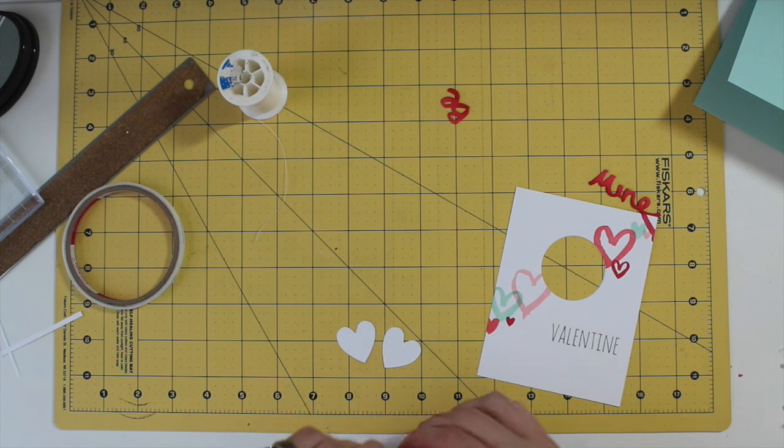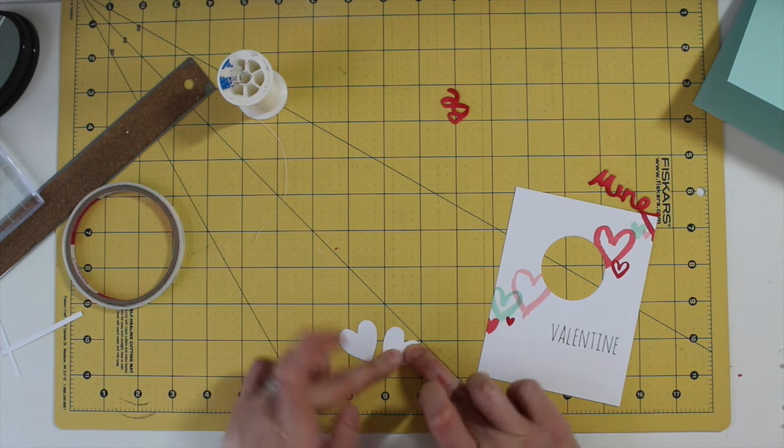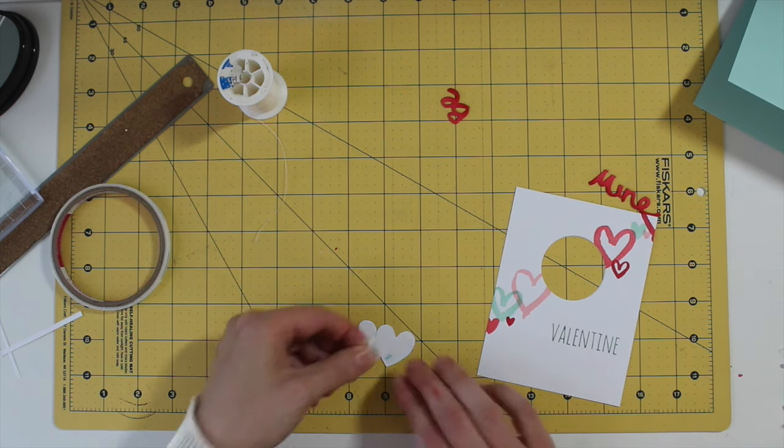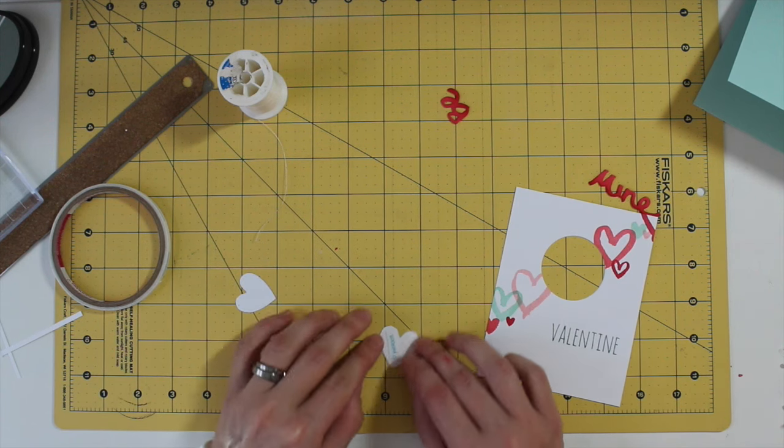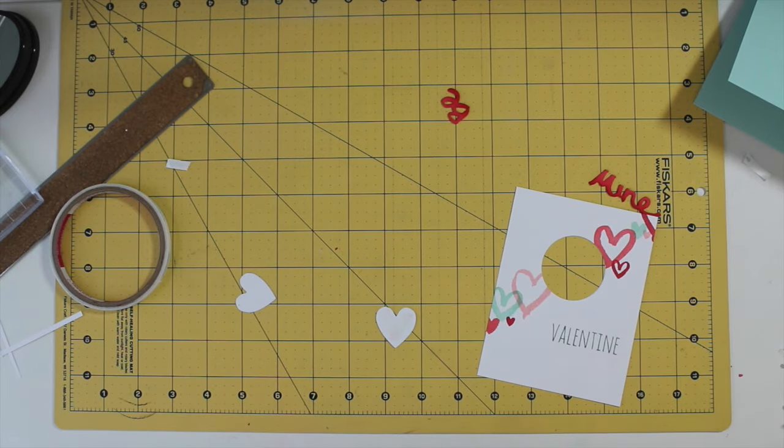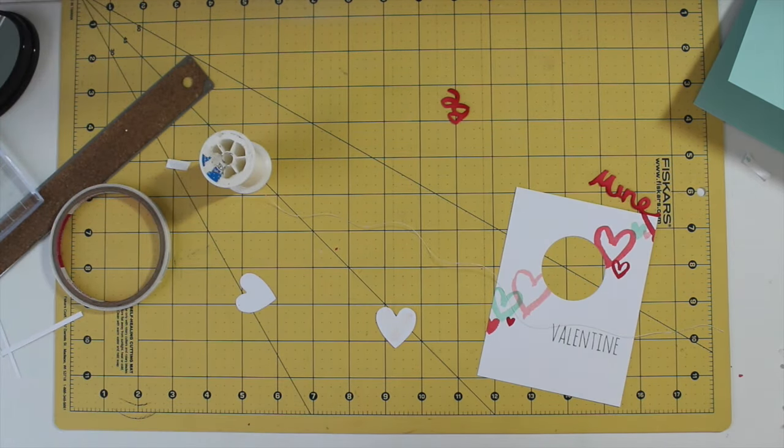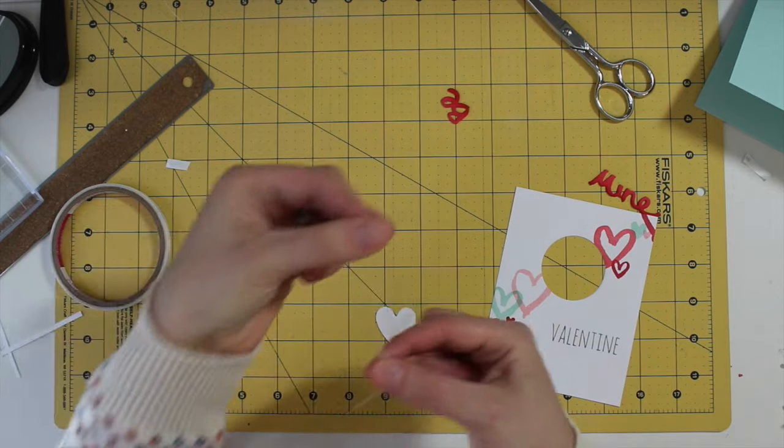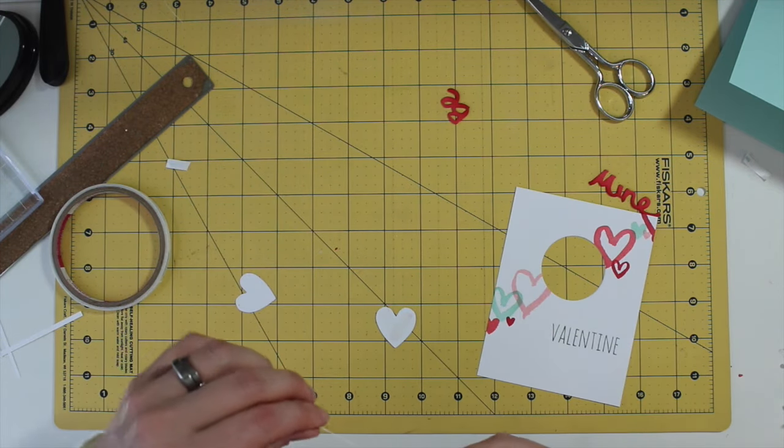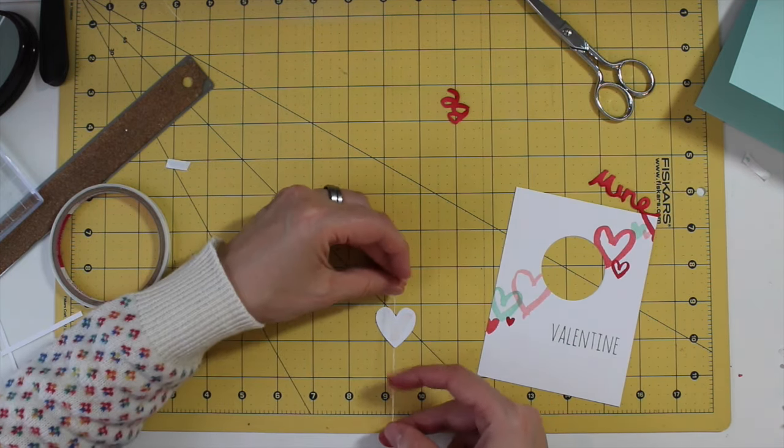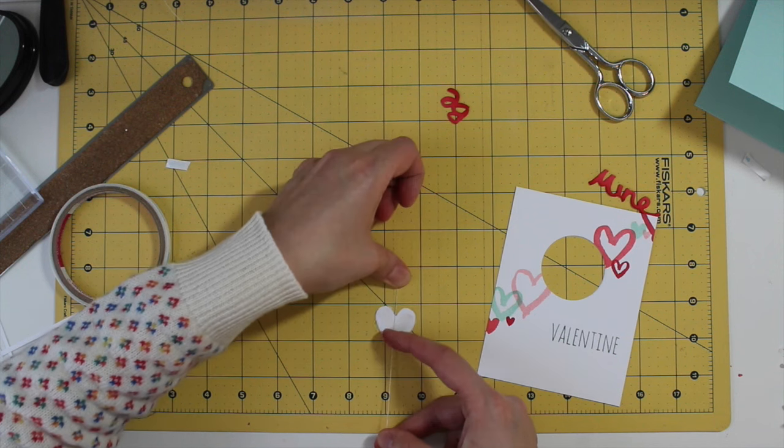And now I'm going to put the spinner itself together. So I'm adding adhesive to the back of the heart die cuts, or at least one of them for now. And that's going to hold the thread in place. So here I'm just removing the adhesive backing. And you don't need a whole lot of thread, maybe 8 inches at most. I double it up just to make sure that you really get great twisting action.